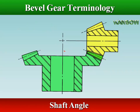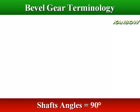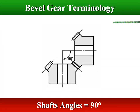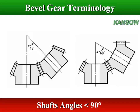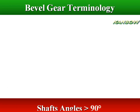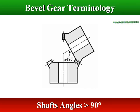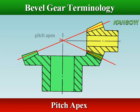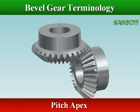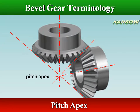The shaft angle is the angle between the axis of the intersecting shafts. The intersection of a bevel gear's pitch surface with its axis is called the pitch apex. With a mating gear pair, their individual pitch apexes should be made to intersect in order for appropriate teeth engagement.